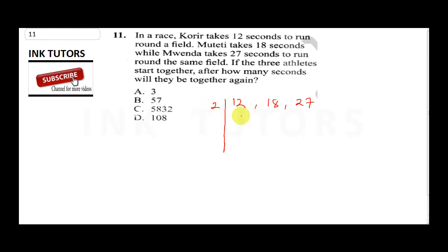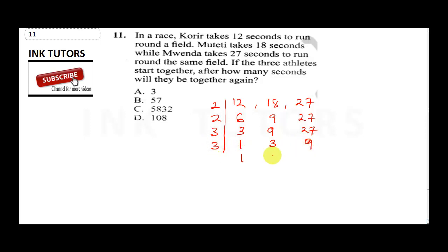Starting with 2: 2 into 12 is 6, 2 into 18 is 9, 27 stays. Divide by 2 again: 2 into 6 is 3, 9 stays, 27 stays. Now 3 can go: 3 into 3 is 1, 3 into 9 is 3, 3 into 27 is 9. Divide by 3 again: 3 into 1 is 1, 3 into 3 is 1, 3 into 9 is 3. Divide by 3 once more: 1, 1, 1. So the LCM is 2 × 2 × 3 × 3 × 3.